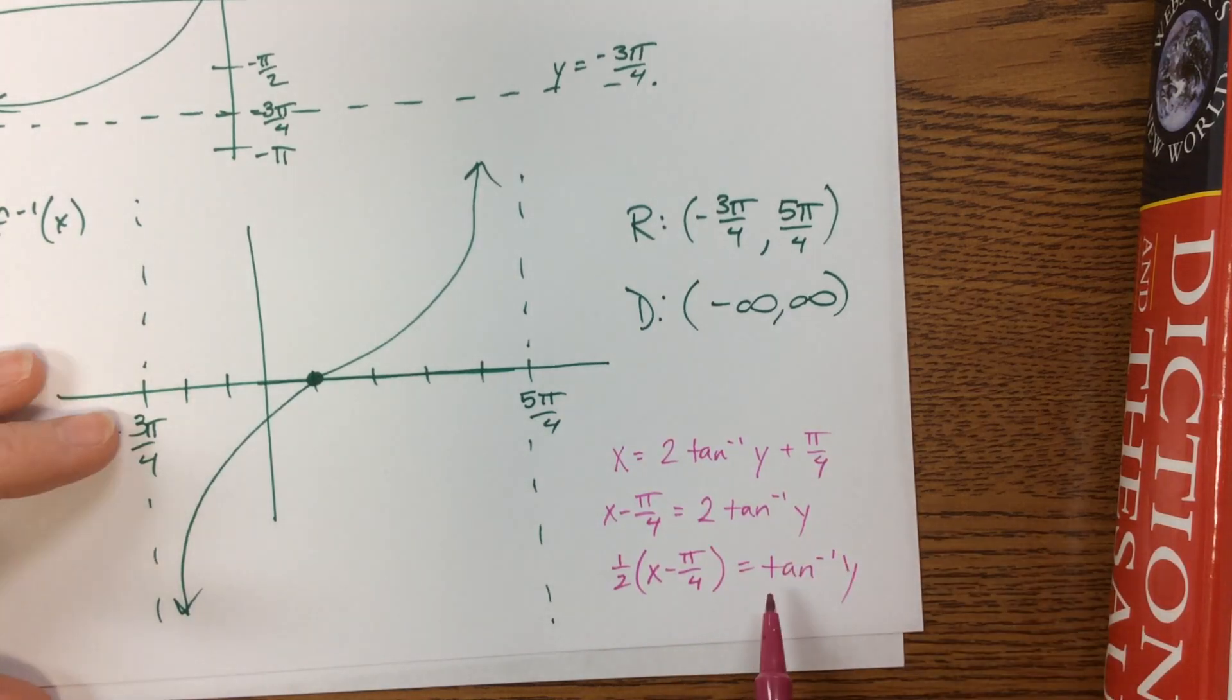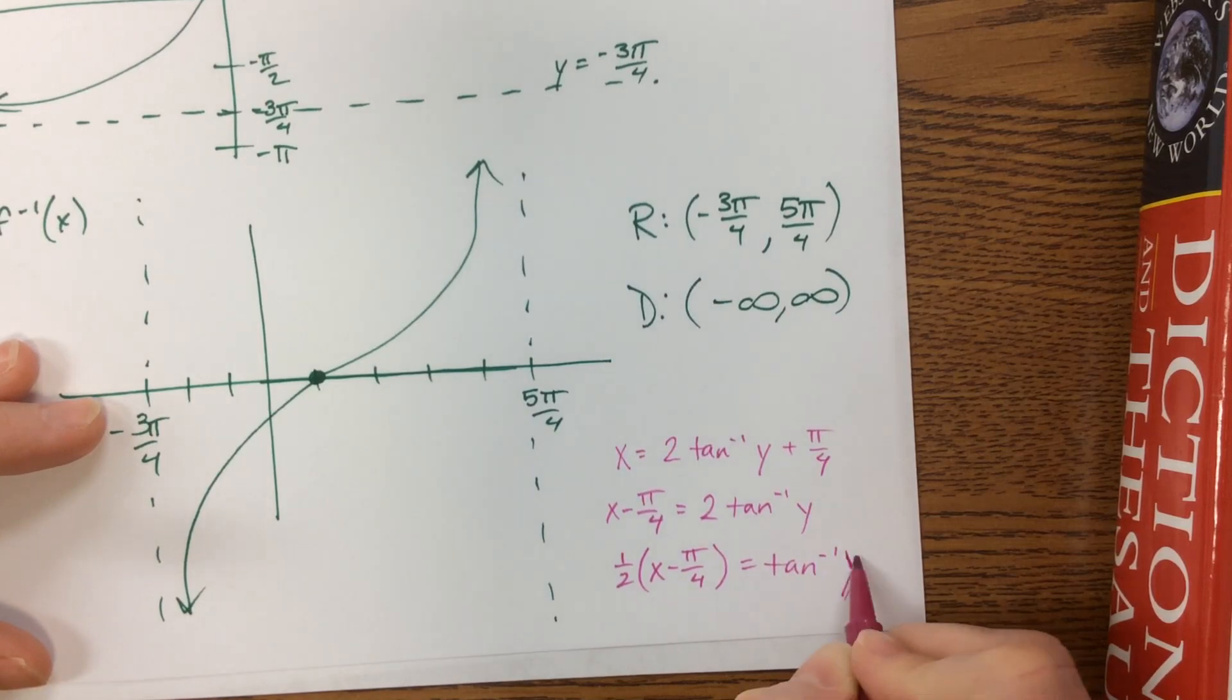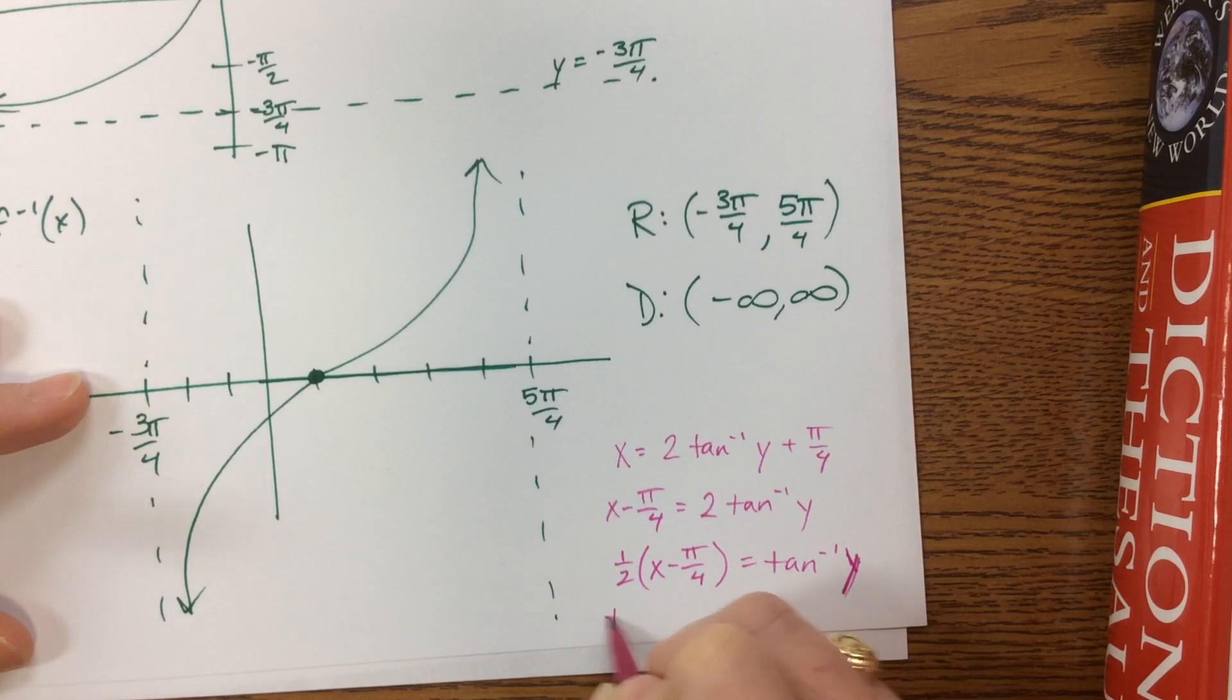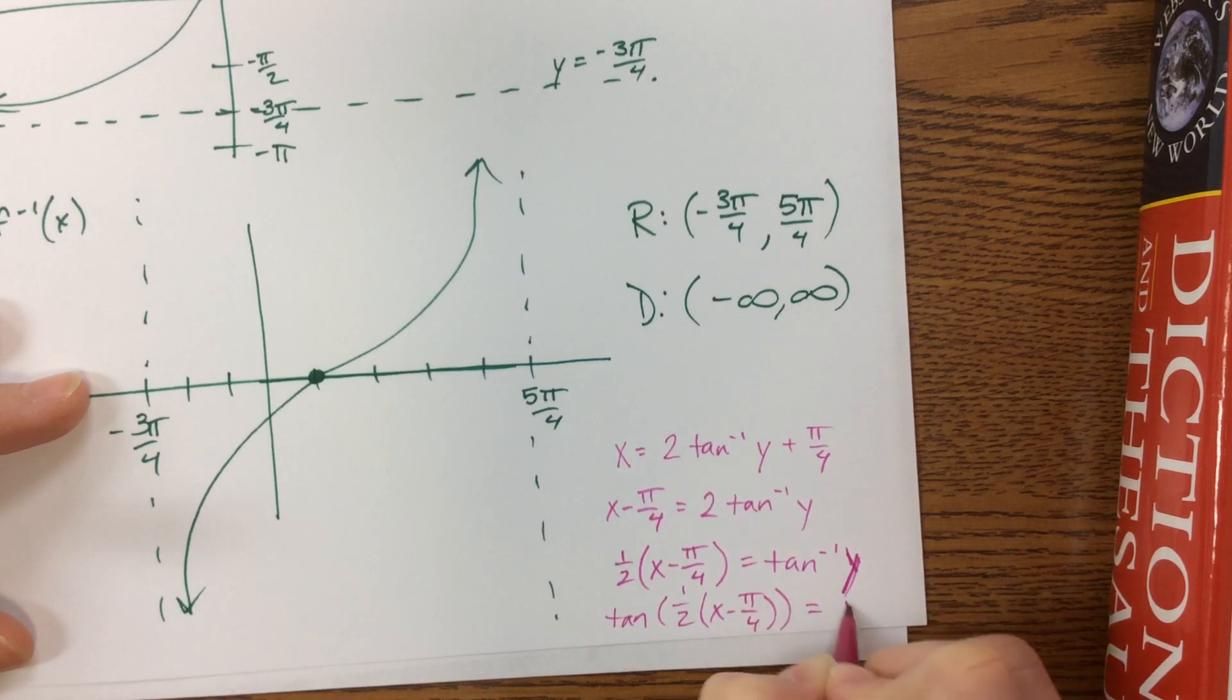And now to undo the inverse, this is a y, and to undo the inverse of tangent, I have to take the tangent of both sides, and so I get tangent of 1/2 times x minus π/4 is equal to y.